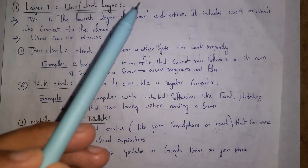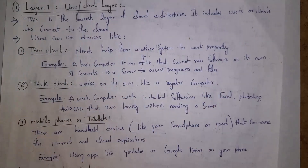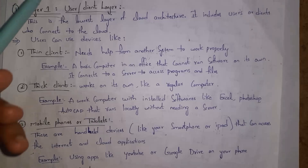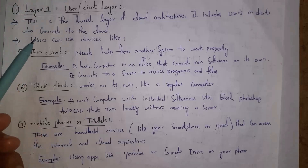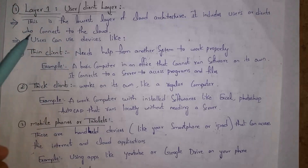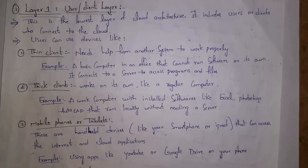First I will explain the user or client layer. This is the lowest layer in cloud architecture. This layer includes users or clients who use the cloud. In this layer, users will use devices like thin clients, thick clients, mobile phones, or tablets.